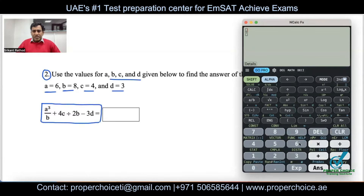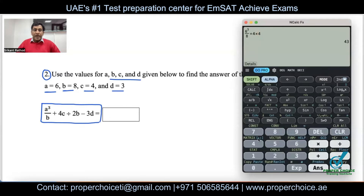Type it as follows: replace a with 6, so 6 cubed, divided by b which is 8, then plus 4 times c — c is 4, so 4 times 4 — all divided by 2 times b which is 8, minus 3 times d which is 3.